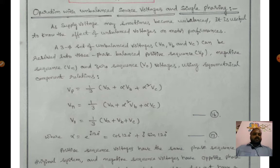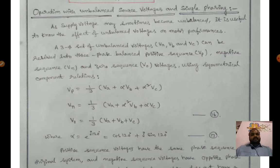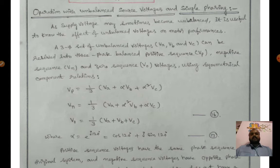Sometimes due to symmetrical or unsymmetrical faults, unbalanced voltages may occur. The supply voltage may increase or decrease — for a three-phase circuit the supply voltage is 440 volts, 50 Hz. It may reduce to 400 or 380, or increase above 440, causing unbalanced source voltages in induction motor drives.